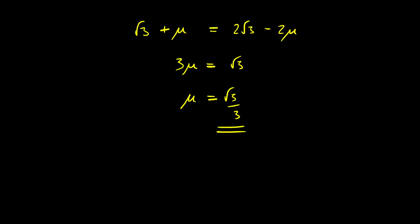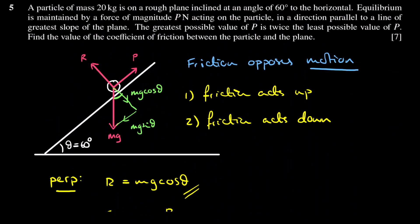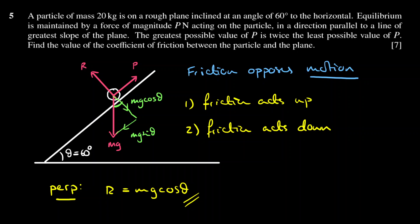If you read the mark scheme, that is the answer it gives: μ = √3/3. However, returning to the assumption I made at the beginning — I assumed P acted up the plane. When the examiners wrote this question, that's probably the assumption they intended, but it doesn't say specifically that P has to act up. There is an alternative valid reading where P acts down the plane, so let's consider that case.